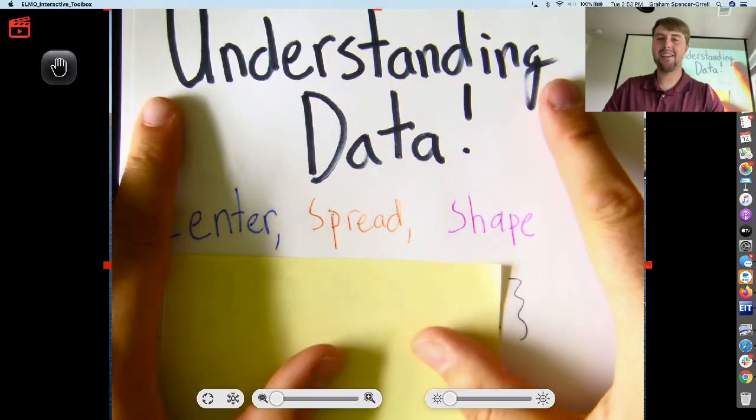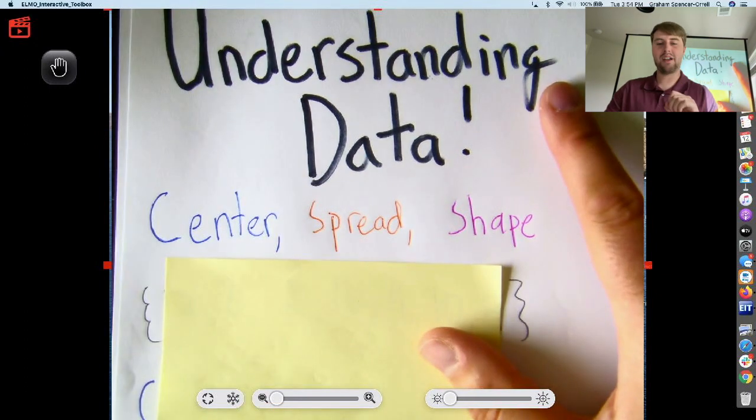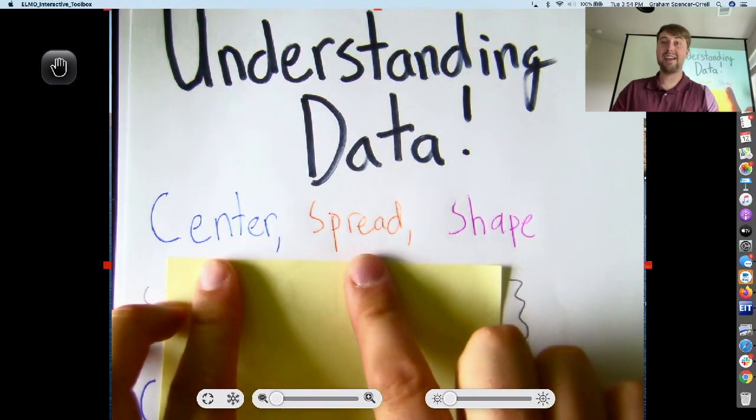Today we're going to look at understanding data. We're going to look at three types of understanding data: the center, the spread, and the shape.